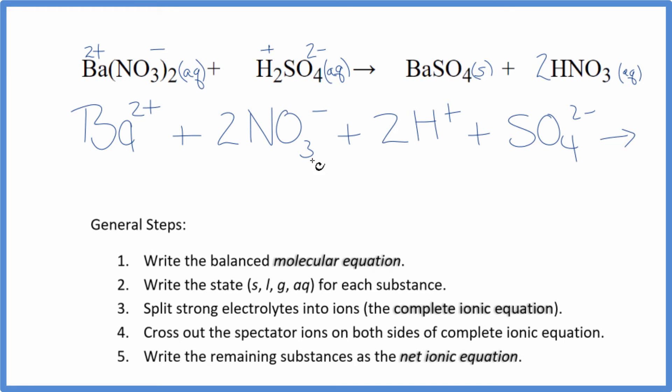For the products, we said barium sulfate, that's a solid. We don't split solids apart in our net ionic equations. And then we have a plus and a minus, so 2 hydrogen ions, and then 2 of those nitrate ions as well. So this is the complete or total ionic equation.